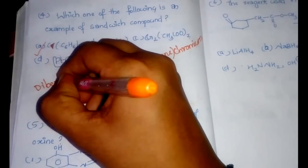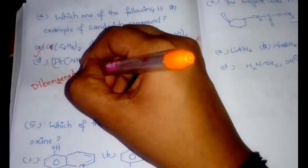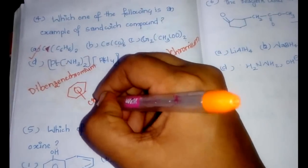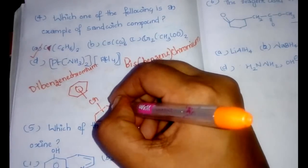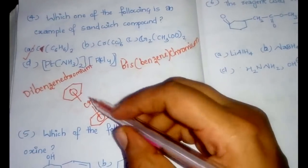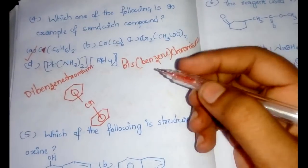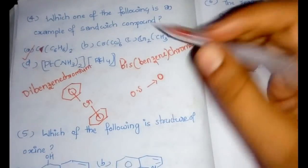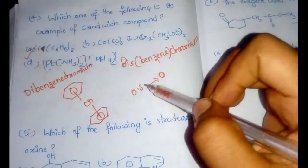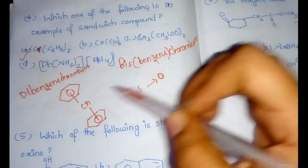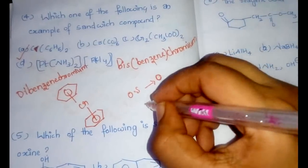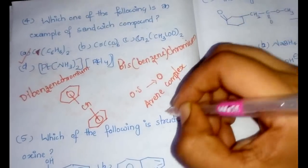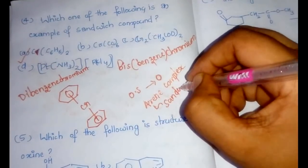This complex is also called dibenzene chromium. It is a sandwich compound like ferrocene. The oxidation state of chromium here is zero, since benzene is a neutral ligand. This is an example of arene sandwich complexes — one of the major examples of arene sandwich compounds.